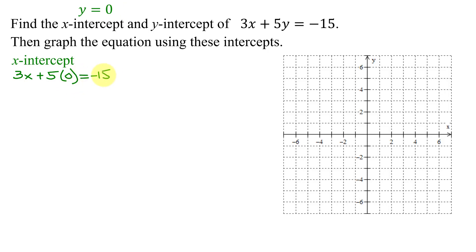Simple linear equation. 5 times 0 is 0, 3x plus 0 is just 3x. So I get 3x equals negative 15. Divide both sides by 3, and I get x equals negative 15 divided by 3 is negative 5.